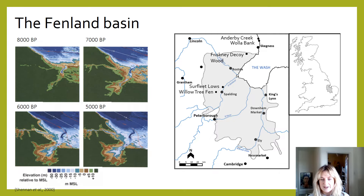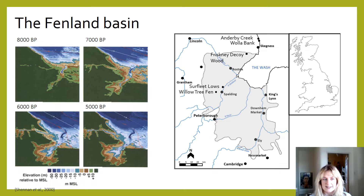So the Fenlands are an area of low-lying land on the east coast of England, characterised by having a very low elevation. A lot of the land is either at or just above or below sea level, and as a consequence the area has been extremely susceptible to fluctuating periods of both freshwater and marine inundation over the past 10,000 years, as illustrated here on this diagram on the left.